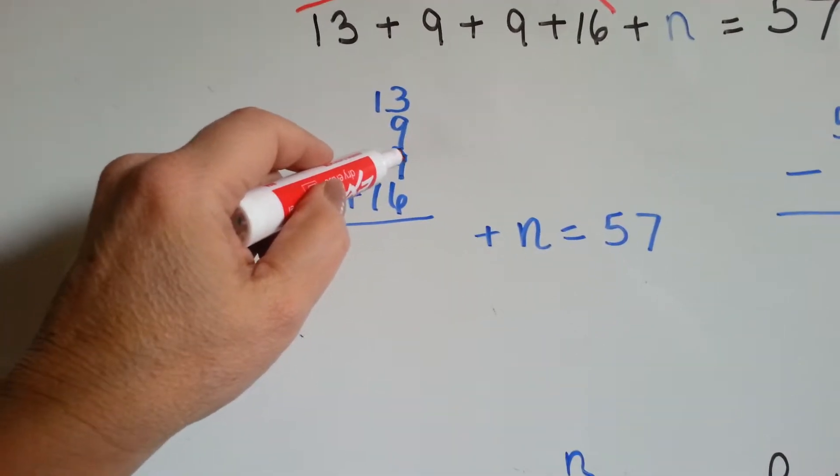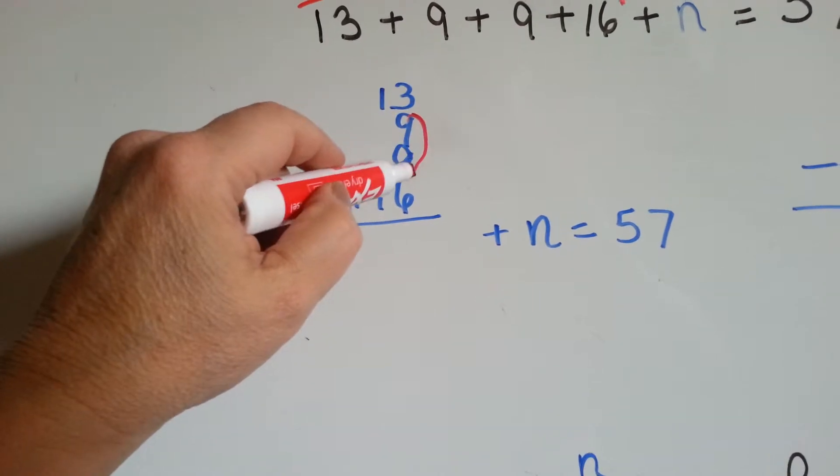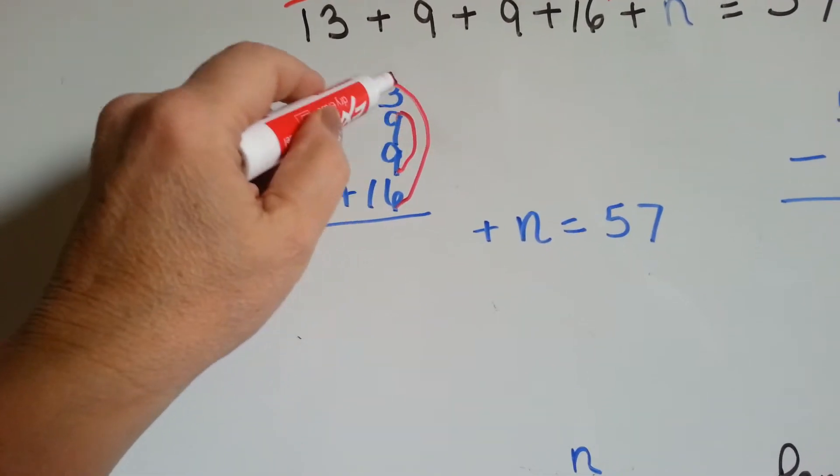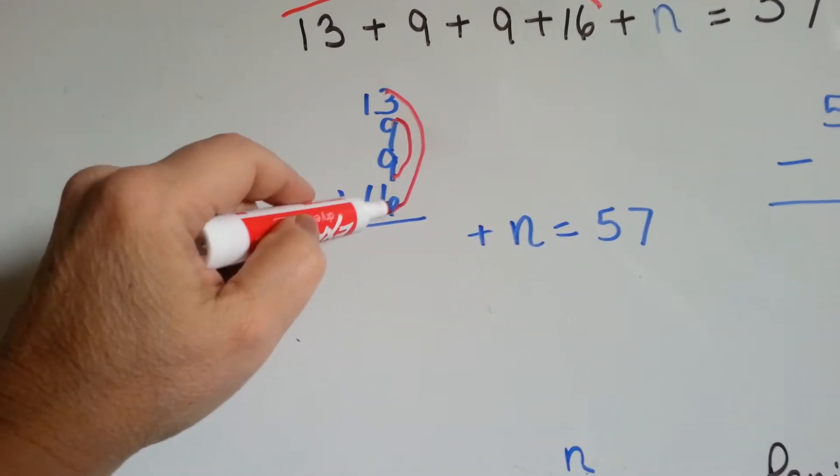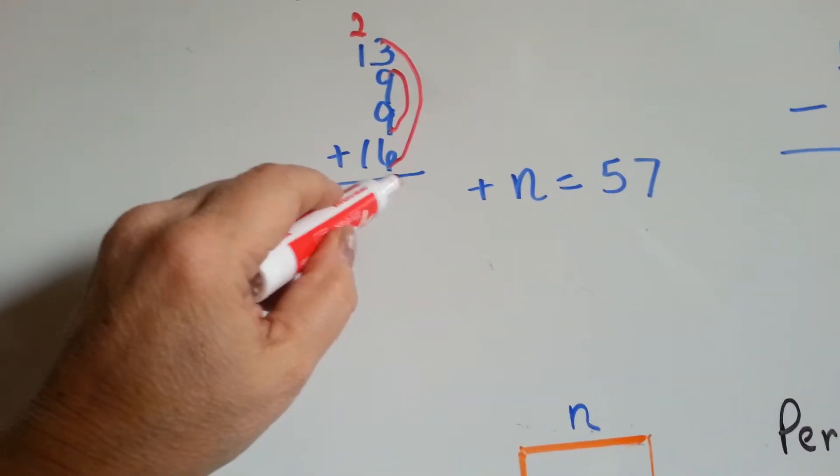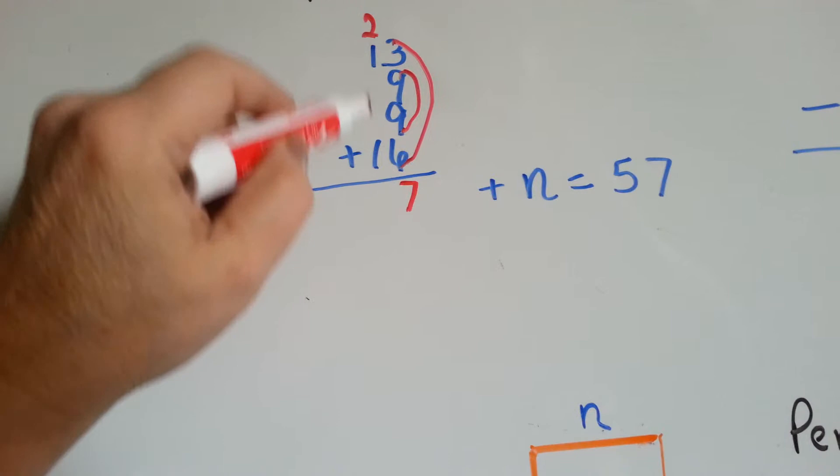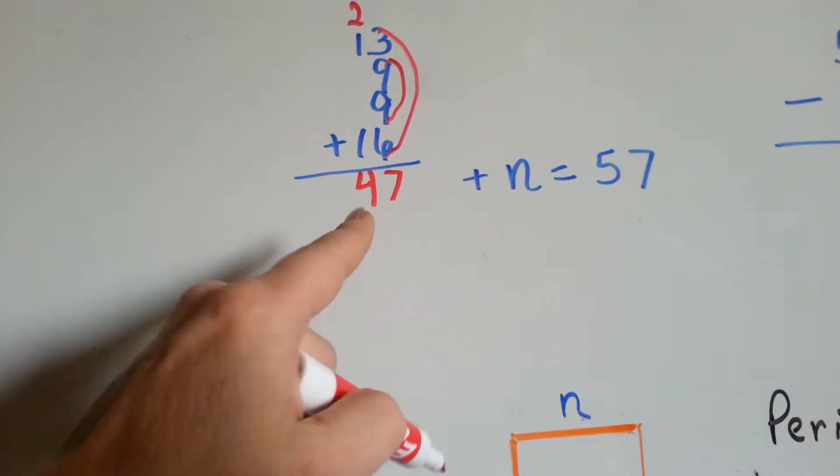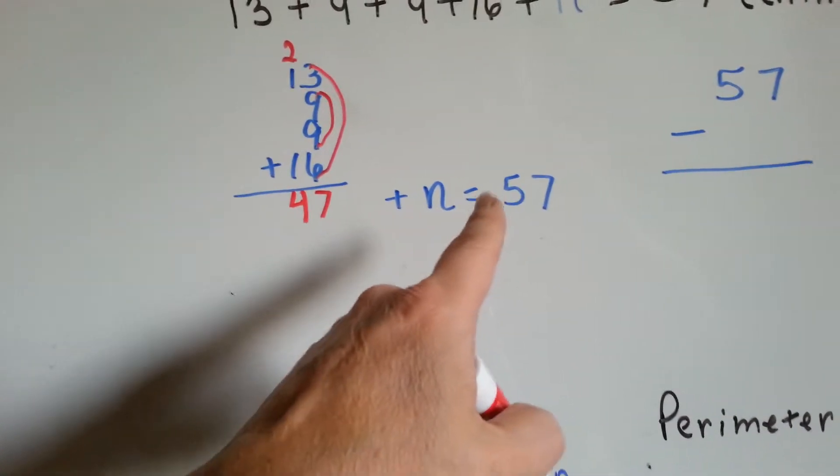9 and 9 is 18. This is 18. And look, 6 and 3 is 9, so we have 3 nines. 3 times 9 is 27. Put the 2 up there, the 7 there. 2, 3, 4. 47 plus n equals 57.